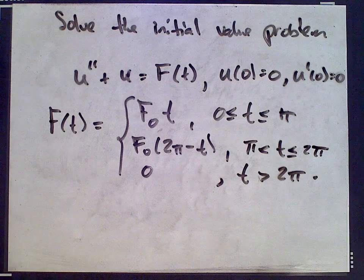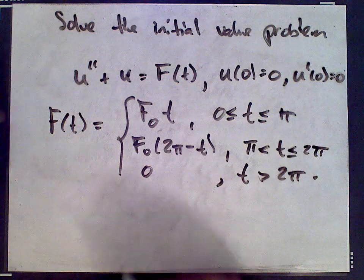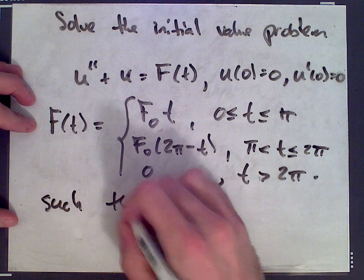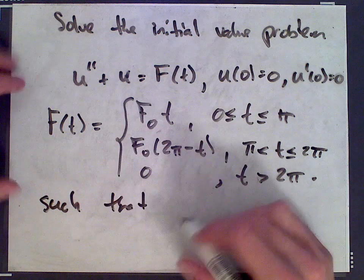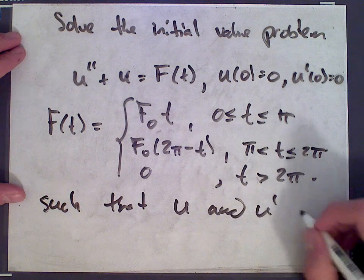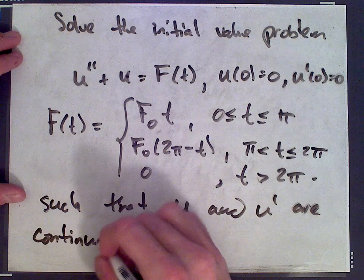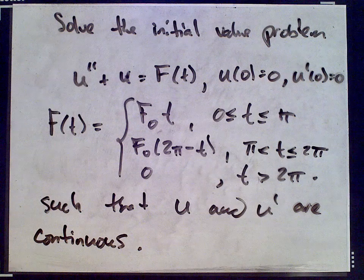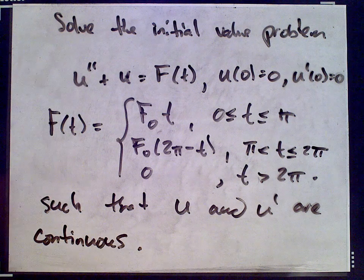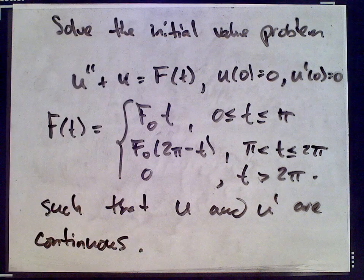We're trying to find a solution to the initial value problem such that u and u prime are continuous. What's going to happen here: we have a piecewise defined function, which means we have really three different differential equations on different intervals, so we plug three different things on the right-hand side.